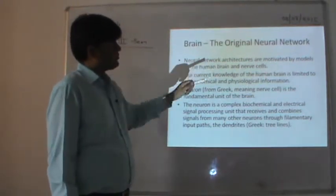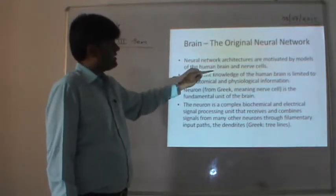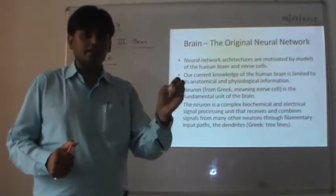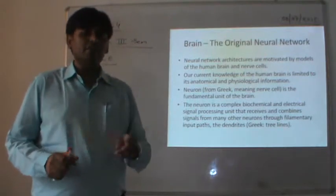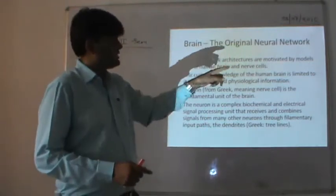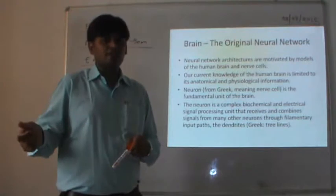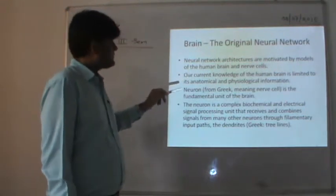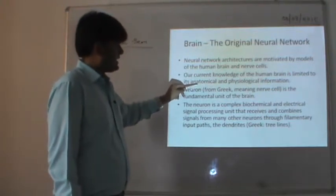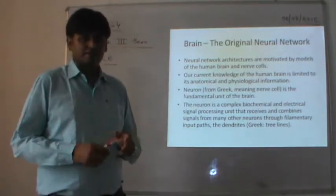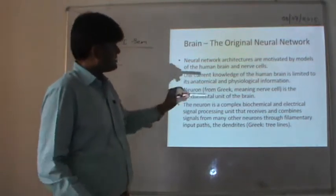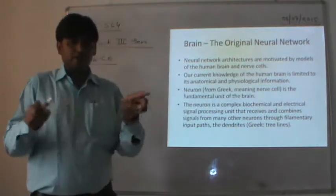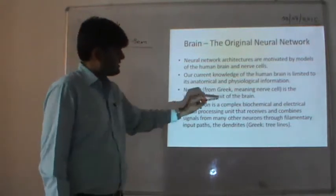The neural network architectures are motivated by models of the human brain and nerve cells. To learn the functionality and architecture of an artificial neural network, we need to go through the similarity between the brain — the original neural network — and then compare it with the artificial neural network. Whatever we know regarding the brain is limited to its anatomical and physiological information. The word 'neuron' is a Greek word whose meaning is 'nerve cell,' which is the fundamental unit of the brain.